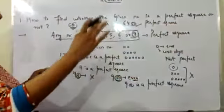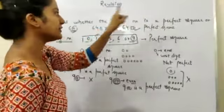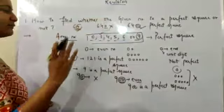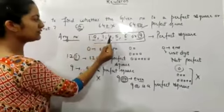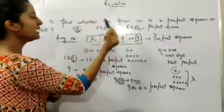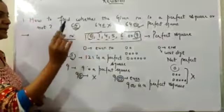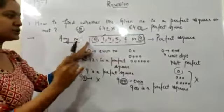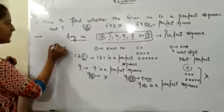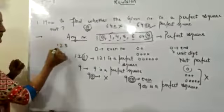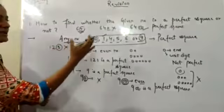So whenever there is a question asking whether a given number is a perfect square or not, we check the unit digit: it should be 0, 1, 4, 5, 6, or 9. Additionally, the number of zeros should be even — if the number of zeros is odd, that number will not be a perfect square. For example, if 3 is at the unit place, this is not a perfect square.